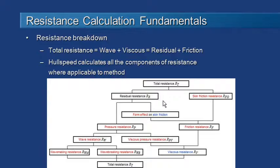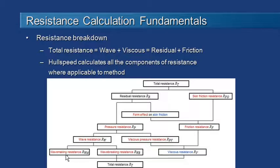Within residual resistance there is also a form effect on skin friction component. Moving that over to the friction side, we can consider total resistance as a combination of pressure resistance plus friction resistance. We can further decompose pressure resistance into wave resistance and viscous pressure resistance. Wave resistance itself breaks down into wave making and wave breaking resistance. Hull Speed doesn't consider wave breaking resistance — very few methods do — but it certainly computes wave making resistance. All methods compute these two components and combine wave making and viscous resistance to give total resistance.